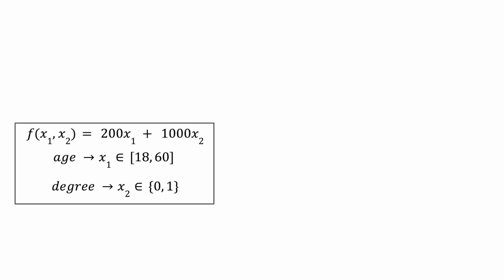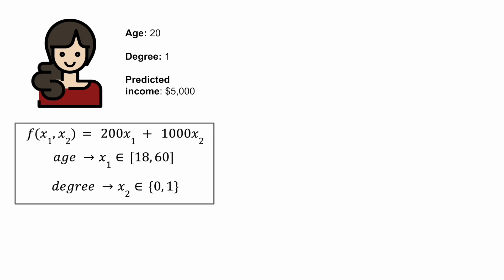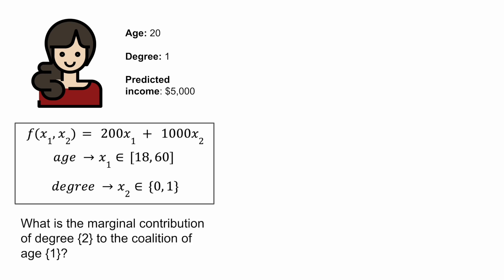Suppose we want to predict someone's income. We end up with a model F, which was built using two features: age, which is uniformly distributed between 18 and 60 years, and degree, where there is an equal chance that someone will have a degree or not. Someone comes along who is 20 and has a degree. Plugging in these values, we see that the model predicts that this person has an income of $5,000. We now want to calculate the Shapley value for degree. To start, we need to calculate the marginal contribution of degree to a coalition of age.